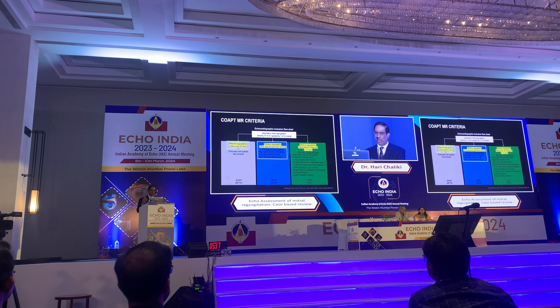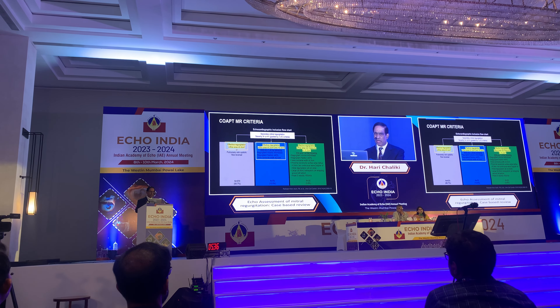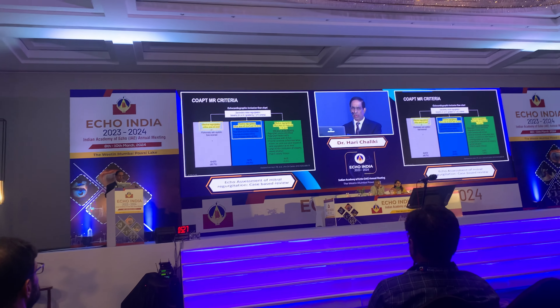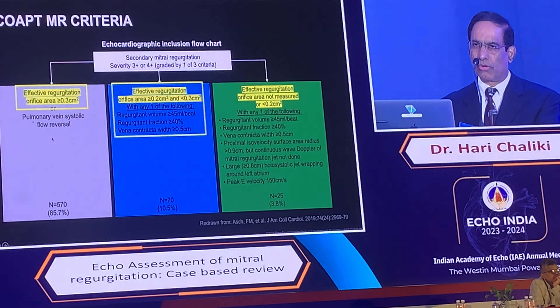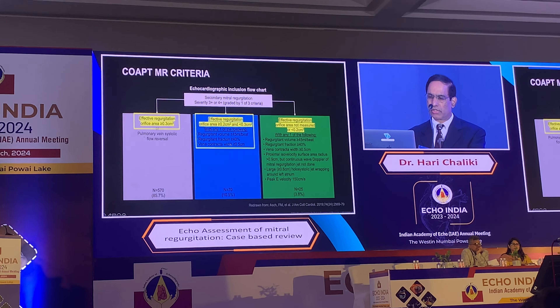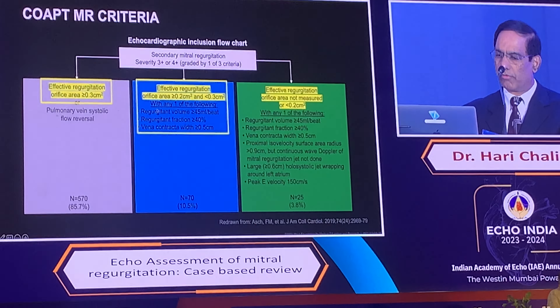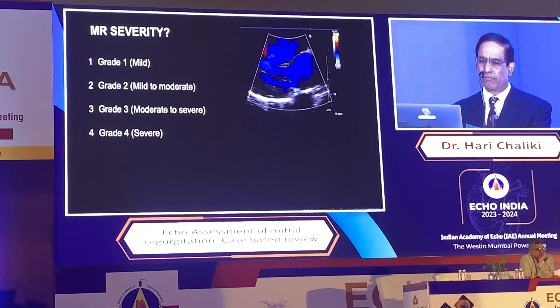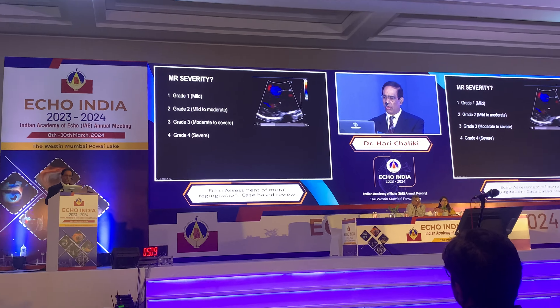More importantly, nowadays with transcatheter therapies patients won't qualify unless you can actually quantitate and confirm truly severe MR. The COAPT trial criteria show an effective regurgitation orifice area of more than 0.3 cm² was required to qualify, or a combination of regurgitation volume and ERO meeting that threshold, with a minor percentage qualifying under other criteria.